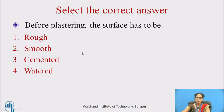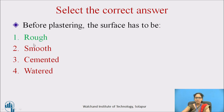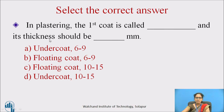Here are some MCQs. Select the correct answer from the options given below. Question 1: Before plastering, the surface has to be — (a) rough, (b) smooth, (c) cemented, (d) watered. The right answer is rough. Question 2: In plastering, the first coat is called dash and its thickness should be dash mm — options are under coat 6 to 9, floating coat 6 to 9, floating coat 10 to 15, under coat 10 to 15. The right answer is under coat, 10 to 15 mm.